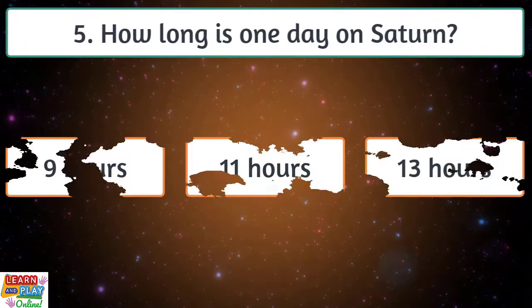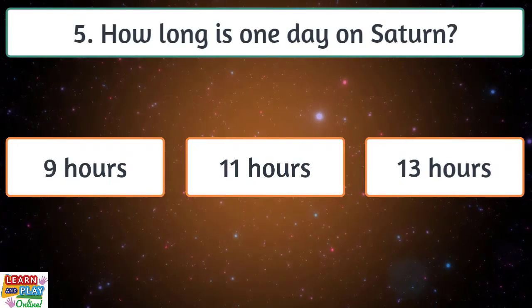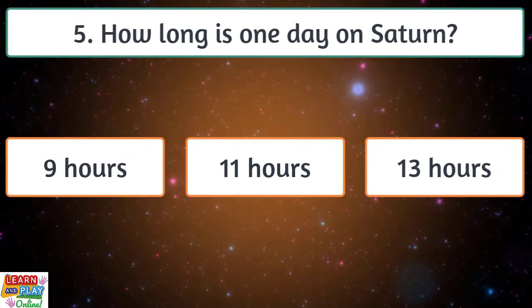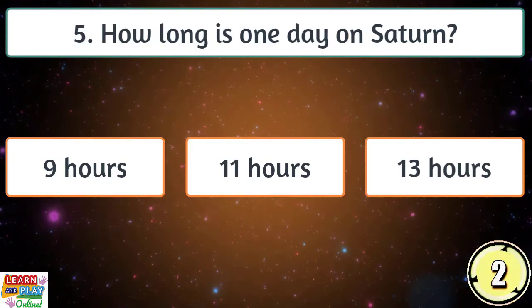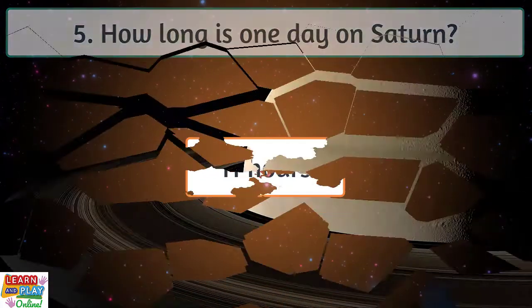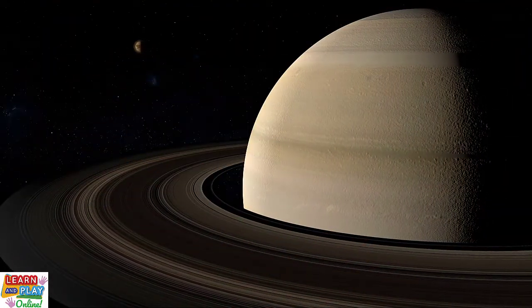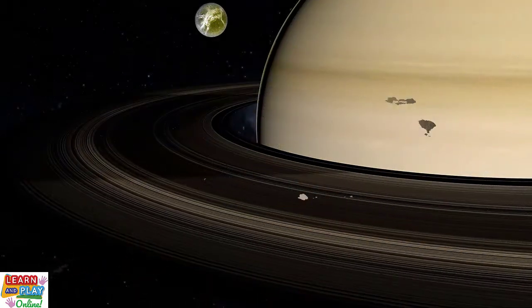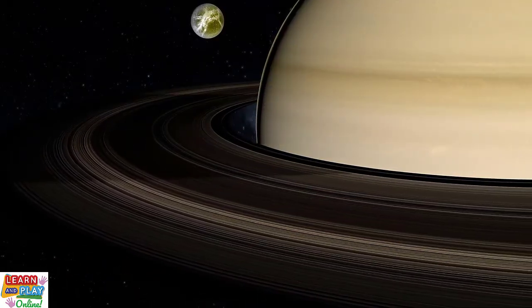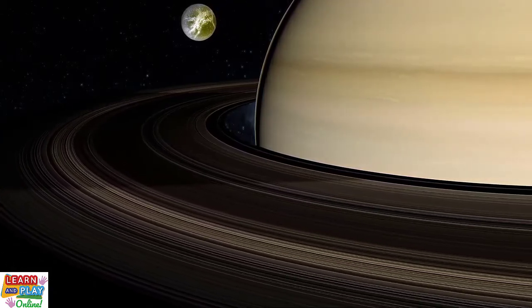Question 5. How long is one day on Saturn? About 9 hours, 11 hours or 13 hours? Saturn may be enormous in size, but it spins very fast. Much faster than Earth. While Earth takes around 24 hours to make a complete spin, it only takes Saturn just less than 11 hours. 10.7 hours to be exact.